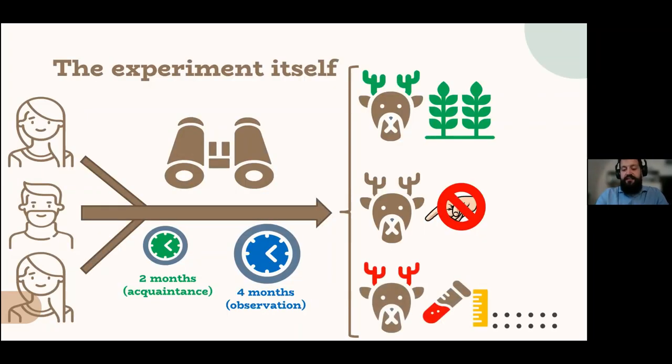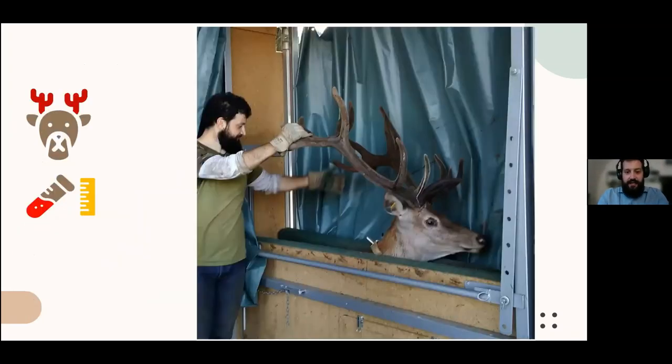And the third context is the handling. The handling is a routine procedure. They had been handled since they were born. Anyway, we had to measure them or take some blood samples and other routine measures. This could be considered as a stressful situation. We wanted to see how they dealt with it. The handling looks like this. That's a crush. We call it crush. It's a restraining facility where the deer are handled.